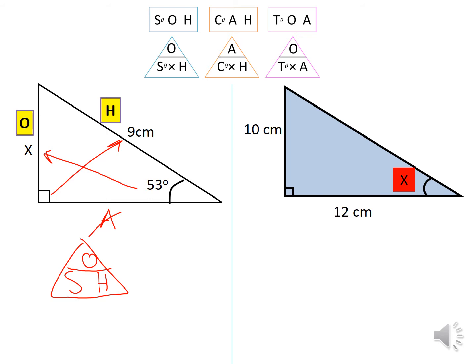For the next triangle on the right, label it again: opposite the right angle is the hypotenuse, opposite the angle is the opposite side, and we're left over with the adjacent. We don't use the hypotenuse because it doesn't have a missing length or value, so we're using opposite and adjacent. The trigonometry formula with opposite and adjacent is the tangent ratio, so we write TOA.